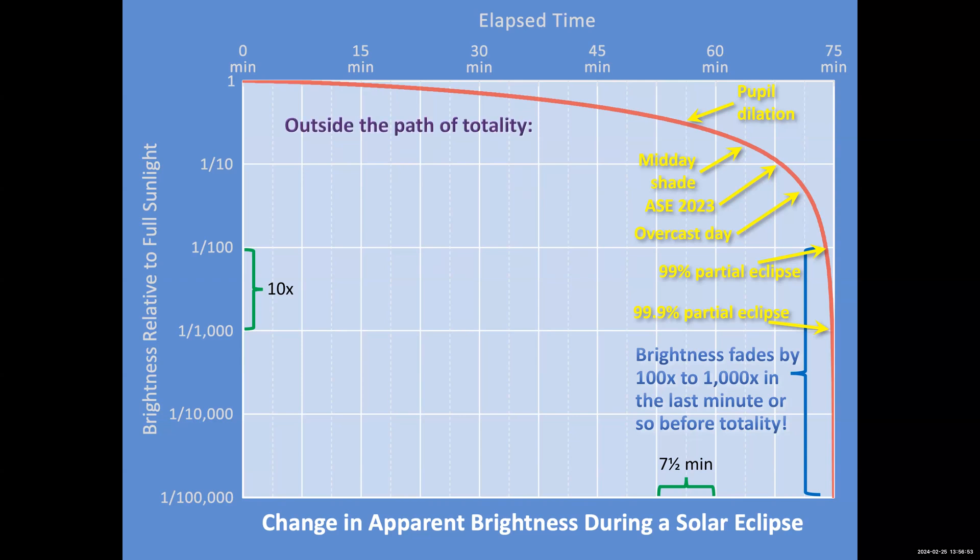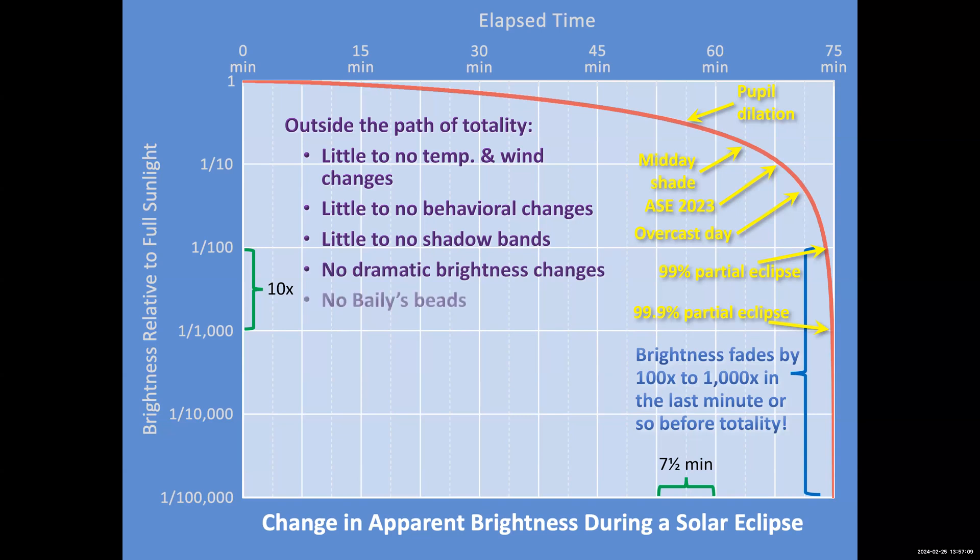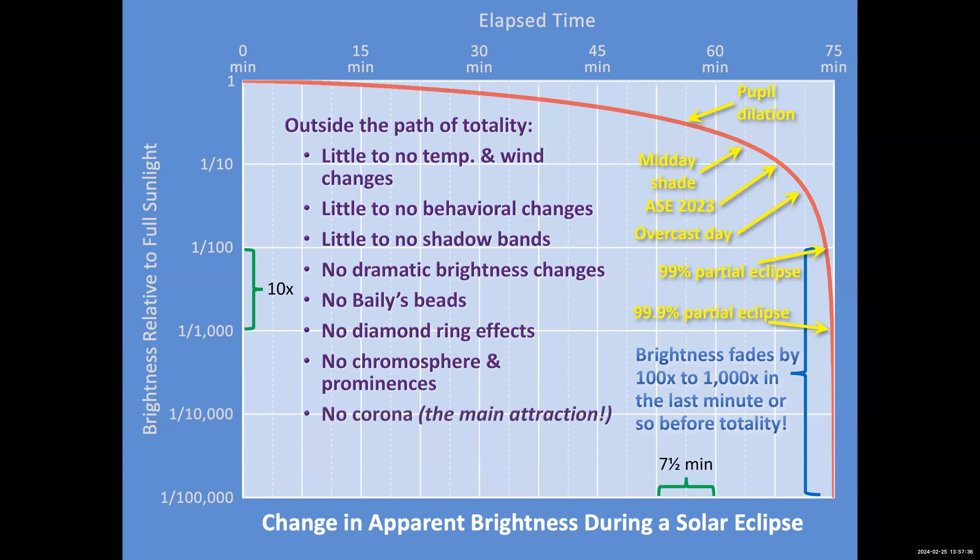Outside the path of totality, even at 99.9% eclipsed, you do not get the same change in temperature or wind changes. You get very little changes in how animals or people behave. You don't see the shadow bands. You don't get this dramatic plunge into darkness. You don't get to see Bailey's beads, these wonderful beads of sunlight you see on the surface of the moon. You do not see the diamond ring, the last valley letting in sunlight. And during totality, you do not see the little bits of pink prominences flaring out from the edge of the moon. And you do not see the corona, this incredible sight of wispy beauty around the black moon that is only visible at 100% totality.